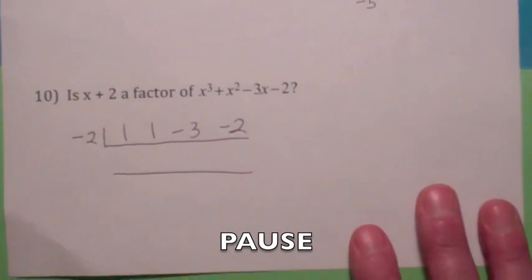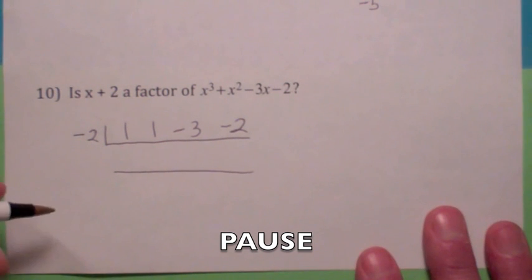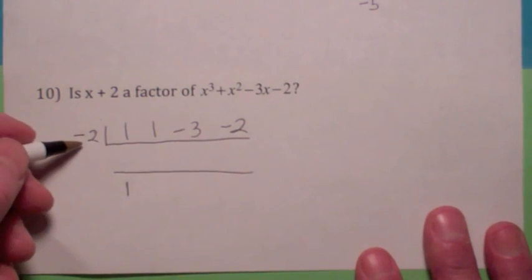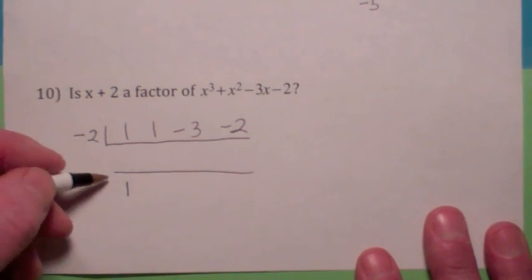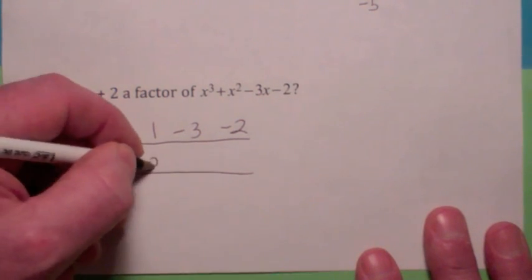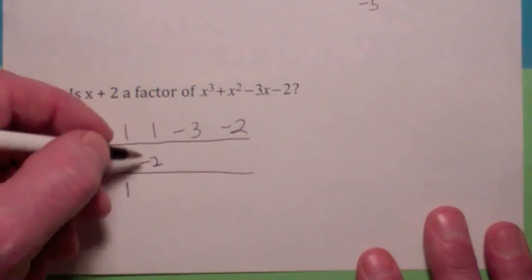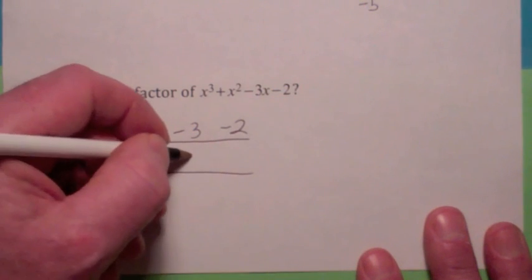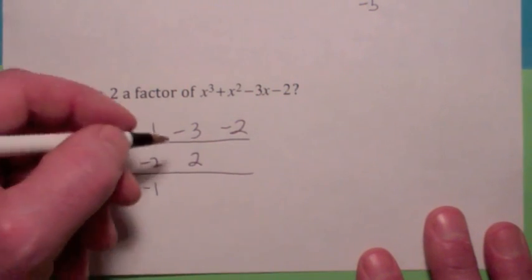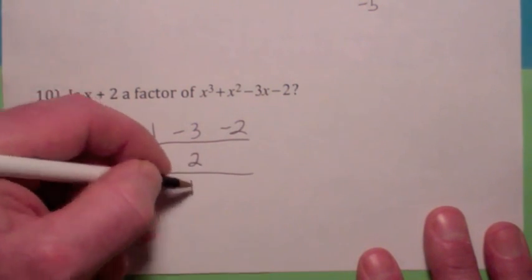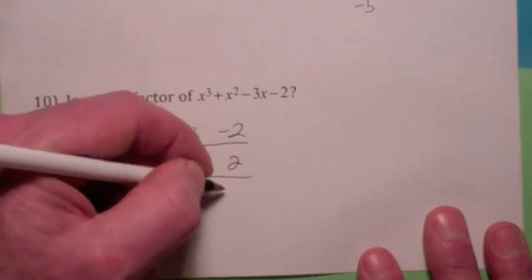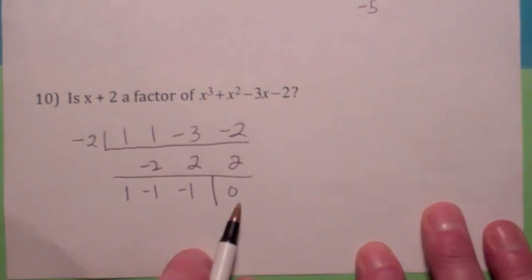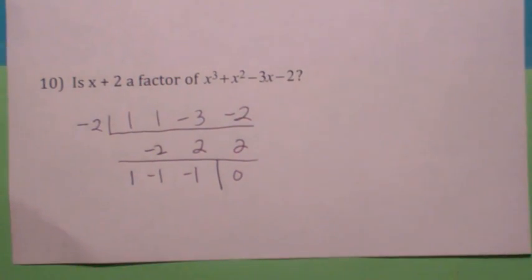See if you can do this one — go ahead and hit the pause button. Here's how it works: bring down the 1, multiply by negative 2 to get negative 2, add to get negative 1, multiply to get 2, add to get negative 1, multiply to get 2, add to get 0. Since the remainder is 0, the answer is yes — it is a factor.